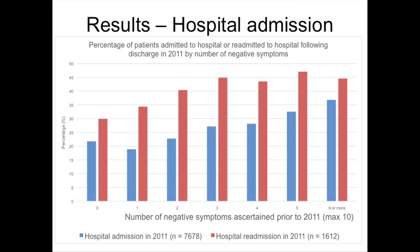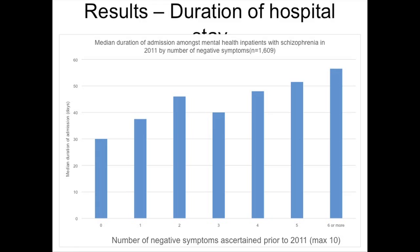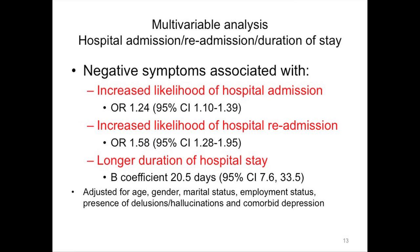When we look at the relationship with clinical outcomes, this graph shows the percentage of patients who were admitted in blue or readmitted in red against the number of negative symptoms documented. The more negative symptoms, the greater the percentage of patients who were admitted or readmitted. Similarly, patients with more negative symptoms had longer hospital admissions. The multivariable analyses showed that patients had an increased likelihood of hospital admission and readmission, and that the presence of negative symptoms was associated with a lengthening of hospital stay by around 20 days.